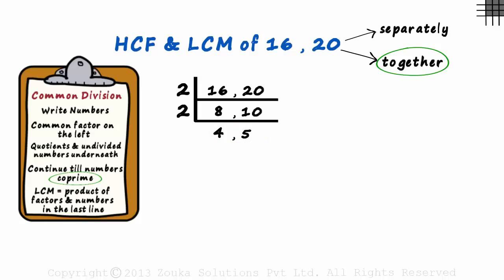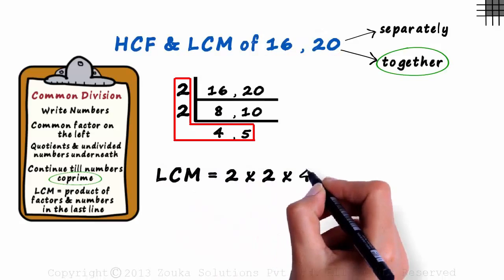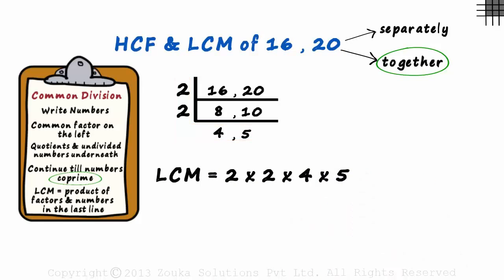The product of the numbers in this L shape gives us the LCM of the two numbers. The LCM equals two times two times four times five. That is four multiplied by twenty, which equals eighty.